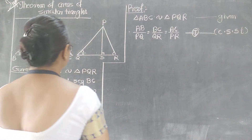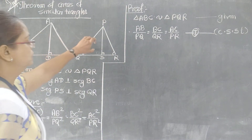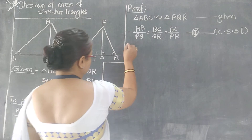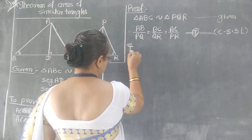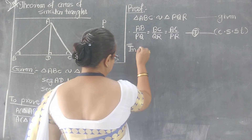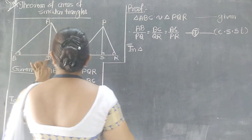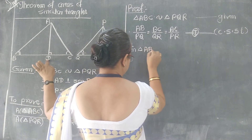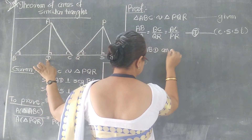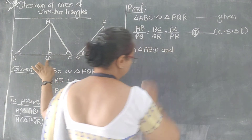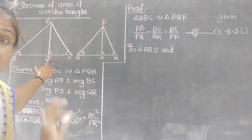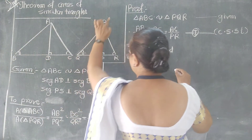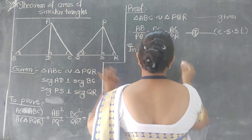Second part: We are going to prove that triangle ABD is similar to triangle PQS. In triangle ABD and triangle PQS, angle B is congruent to angle Q as shown in the diagram — because triangle ABC is similar to triangle PQR, their corresponding angles are congruent.